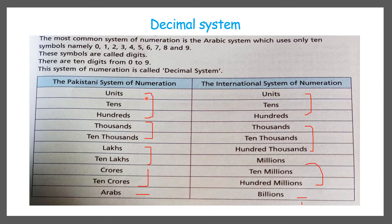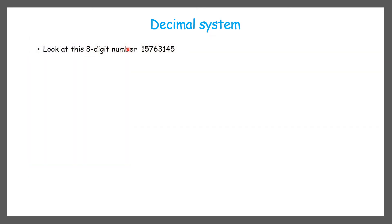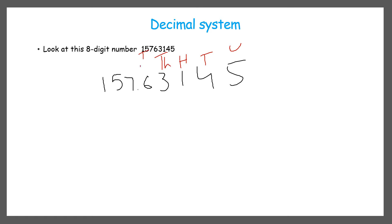Now we will see how we can write a number in each system. Let's consider an example — look at this eight-digit number: 1,57,63,145. We will write this number according to both the Pakistani and international systems by putting correct commas. The places in the Pakistani system are: unit, ten, hundred, thousand, ten thousand, lakhs, ten lakhs, and crores. The first comma comes after the unit group, then the second comma for the thousands group, then a comma for the lakhs group.